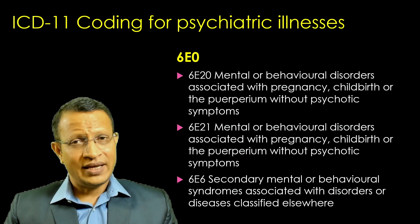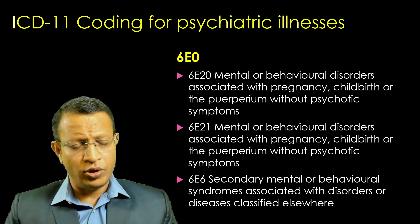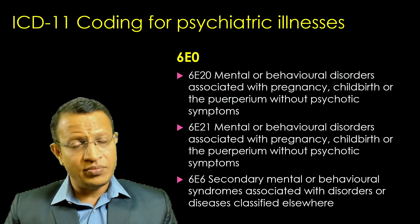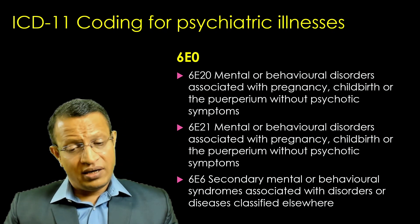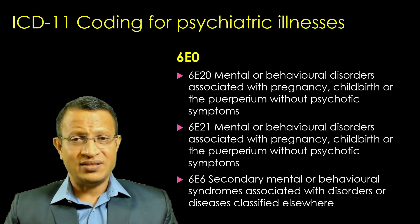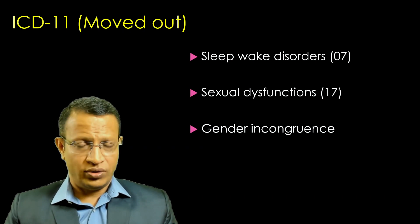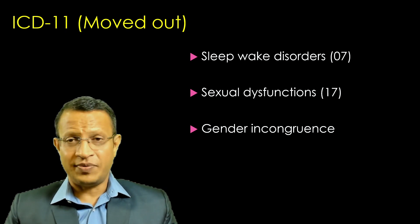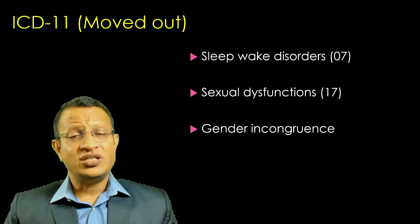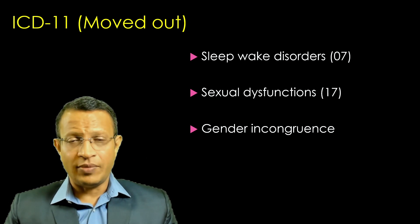Moving to 6E0, that is mental or behavioral disorder associated with pregnancy, childbirth and puerperium — without psychotic symptoms as the first subtype, and with psychotic symptoms as the second. Perinatal-related issues have been given importance as 6E0. Further, some chapters have been moved out from ICD-10 psychiatric section: sleep-wake disorders to Chapter 7, sexual dysfunction to Chapter 17, and gender incongruence — including transgender — also moved out of mental disorders.